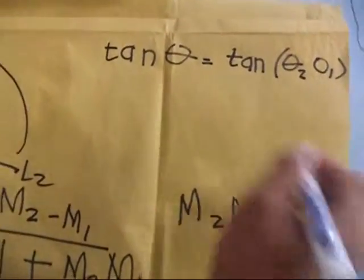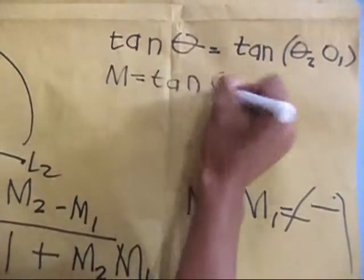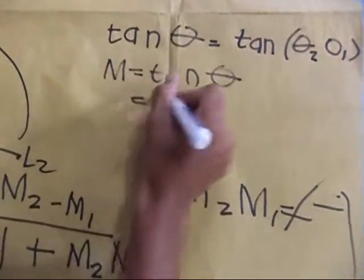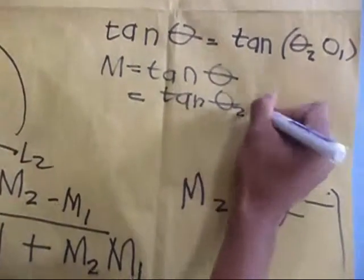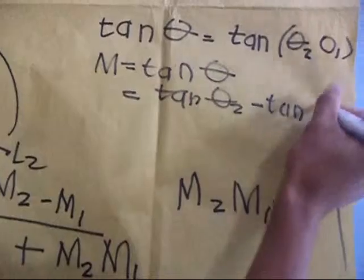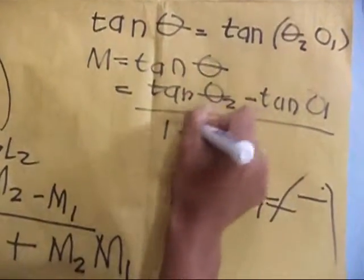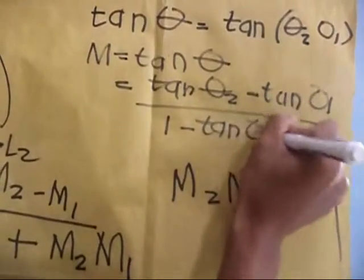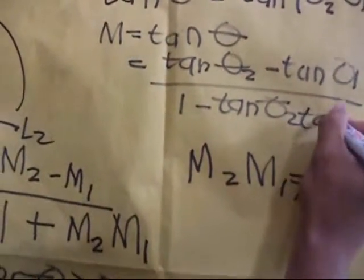Since slope M equals tangent theta, this becomes tangent theta 2 minus tangent theta 1, all over 1 minus tangent theta 2 times tangent theta 1.